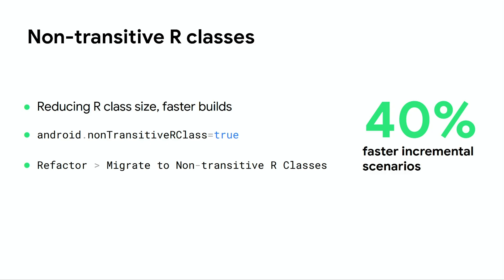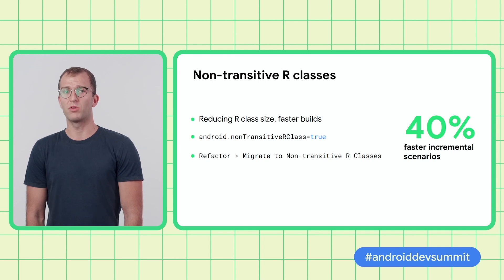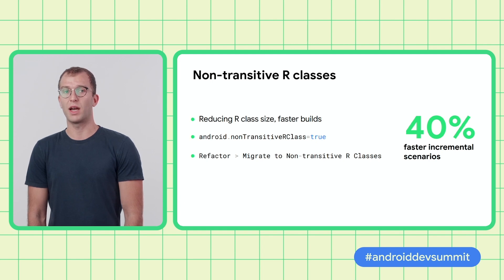With non-transitive R classes enabled, the R class includes only the resources declared in the subproject itself, and none from its dependencies, thereby reducing the size of the R class for that subproject. The scenario where this is very helpful is when you add a new resource in a runtime dependency, because we are now able to avoid recompiling downstream modules. This incremental scenario improves by 40% with non-transitive R classes enabled. For clean builds, we are seeing 5% to 10% improvement. You can add this flag in your Gradle.properties file, but we've also added refactoring help in Arctic Fox. You can run Refactor > Migrate to Non-Transitive R Classes from the IDE, which adds the write flag to your build and modifies sources if needed.